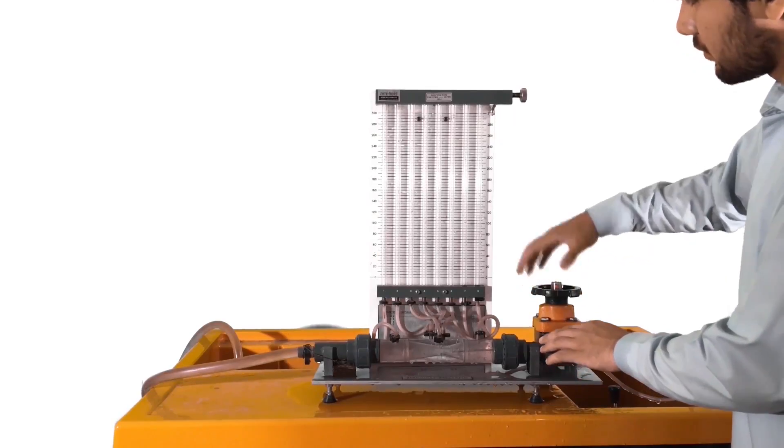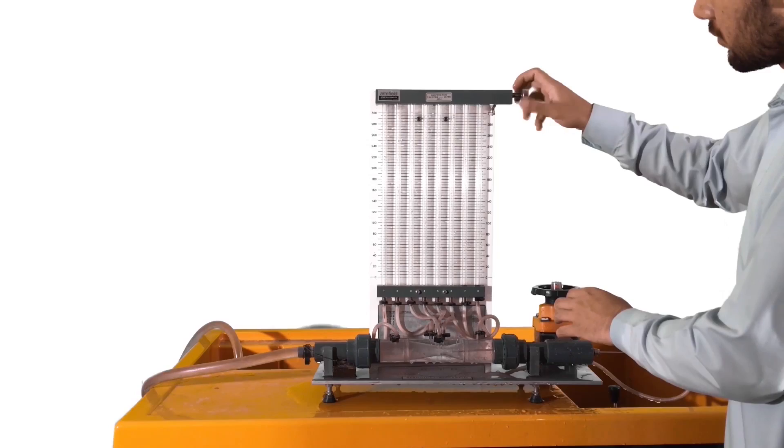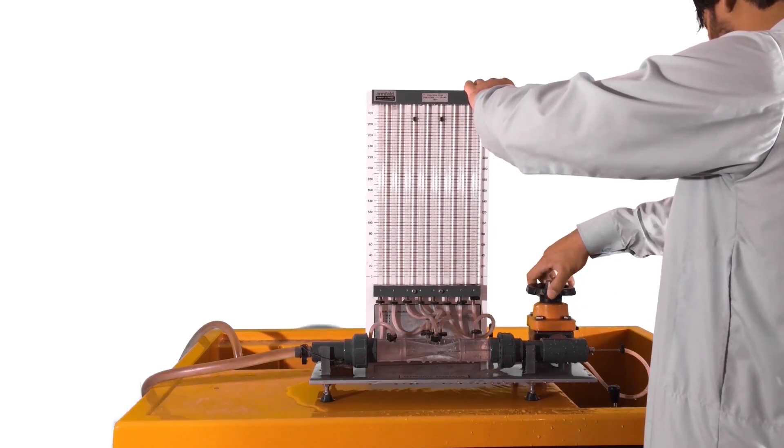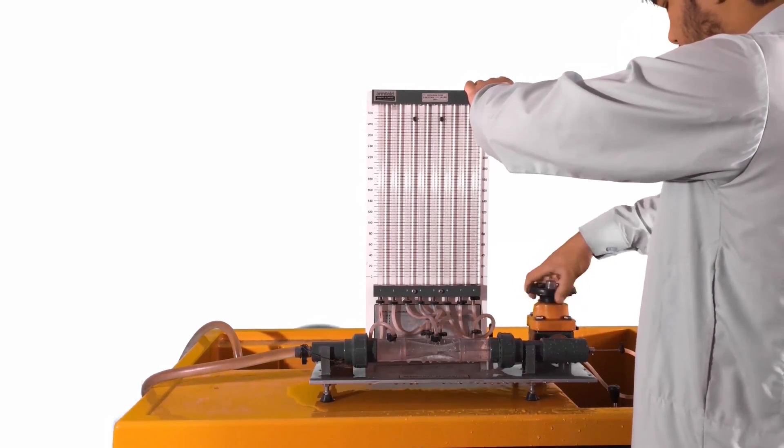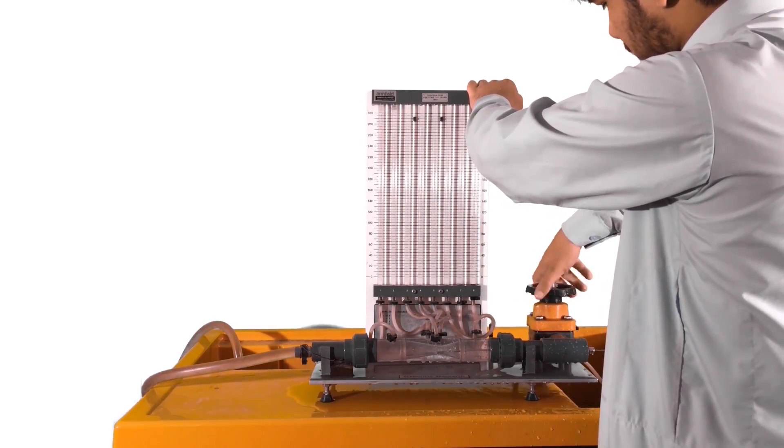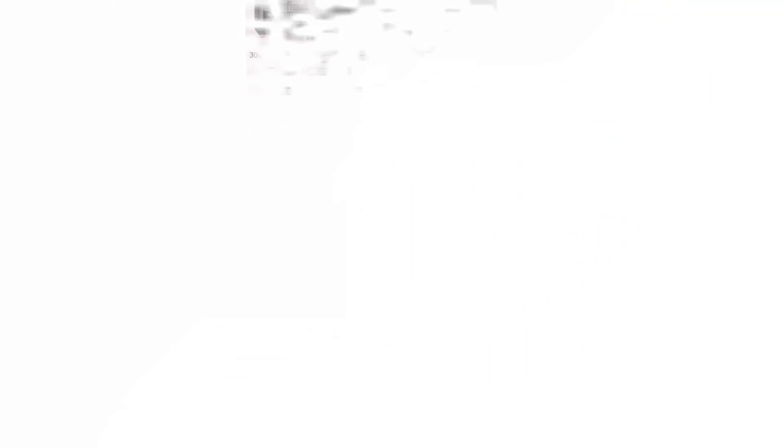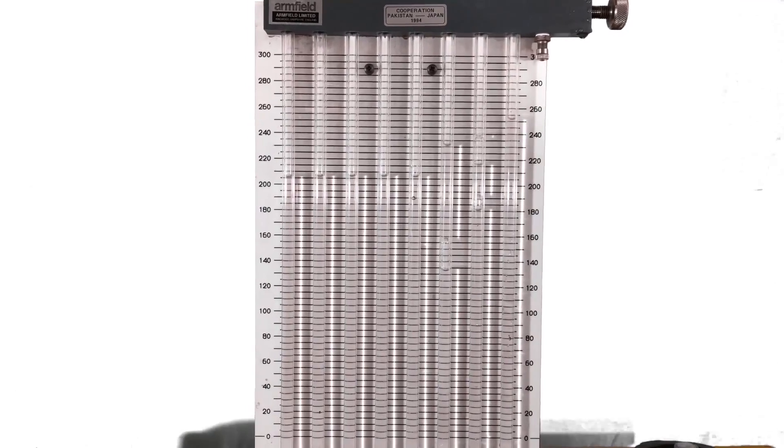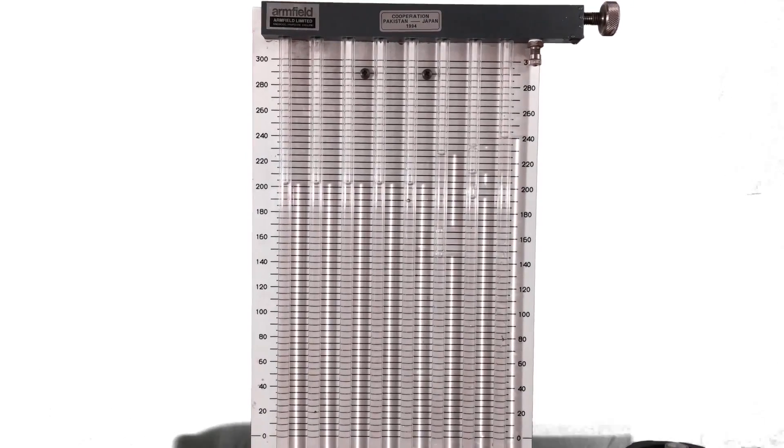We also open the water outlet valve and remove the air head screw. We do this to remove any air inside the apparatus. We might need to place our thumb on the air screw valve momentarily and slowly to remove the air. Now we can see there are air bubbles inside the apparatus, and we don't want that.